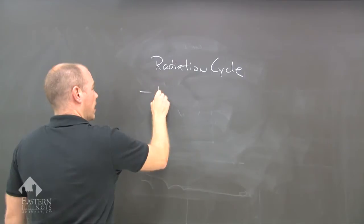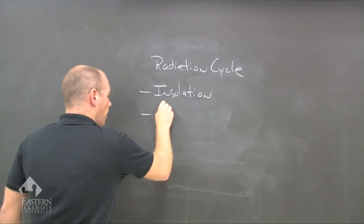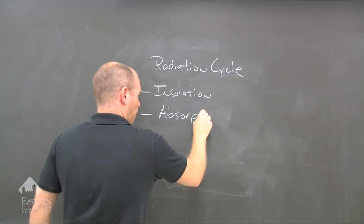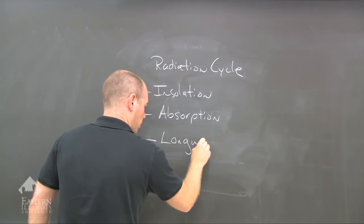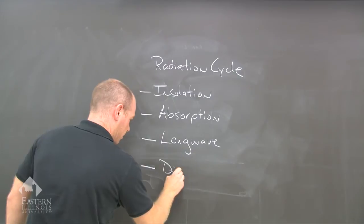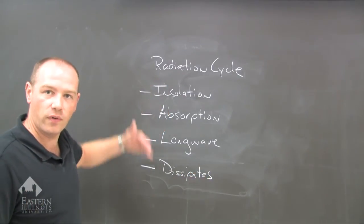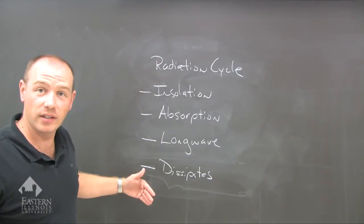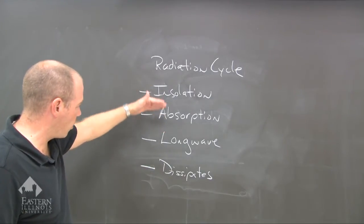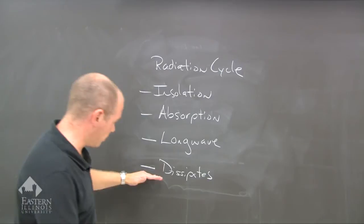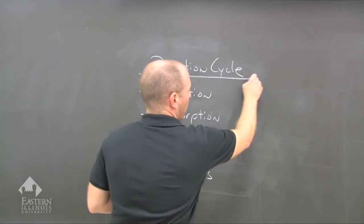And that is insolation must happen first. Then you get absorption. And then you get long wave radiation. And then it dissipates. So we get this. And it goes over and over and over as long as the sun or the energy is still there. The insolation, the short wave radiation is still there. So we get insolation, absorption, long wave radiation, and then dissipates. The energy dissipates. So that again is the radiation cycle.